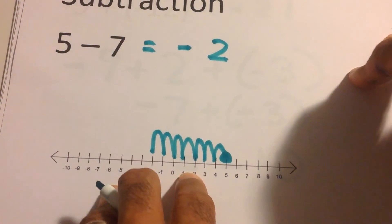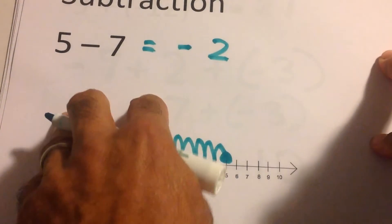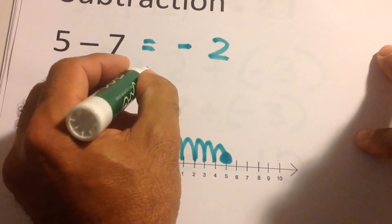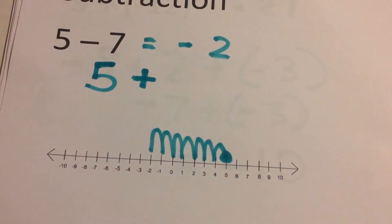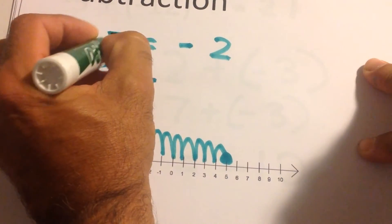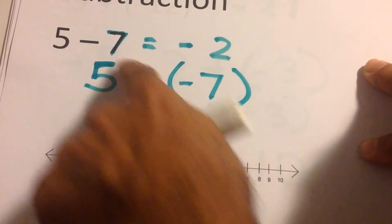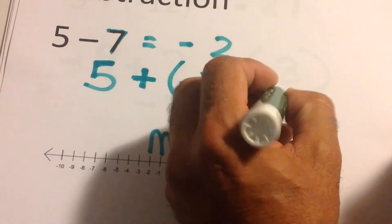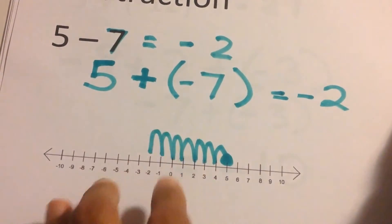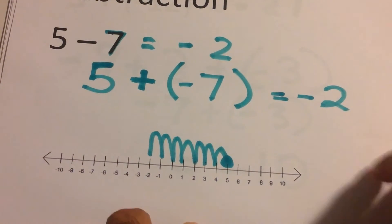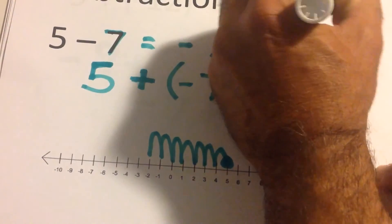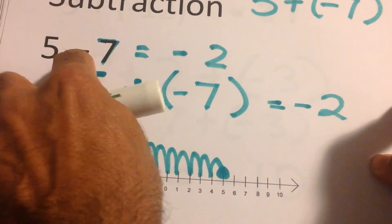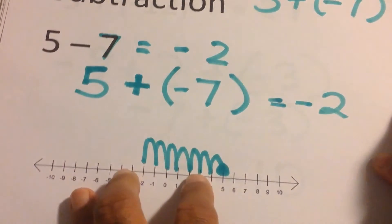Subtraction can be turned into addition using a technique called Keep Change Change. You keep the first number, change the subtraction sign to addition, and change the sign of the second number. So five minus seven becomes five plus negative seven. You have five dollars but owe seven, so you owe two. Only use Keep Change Change with subtraction.